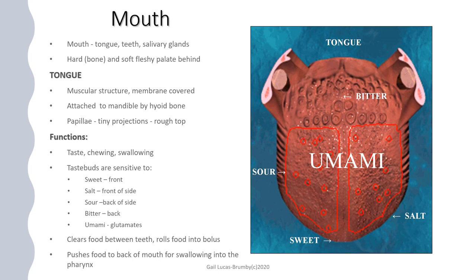The tongue aids in chewing, pushing food between the teeth, rolling the food into a bolus, and pushing it to the back of the mouth ready for swallowing into the pharynx at the back of the throat.